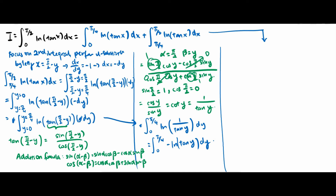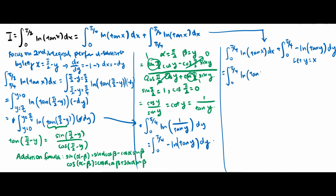So this whole thing equals: the original integral is equivalent to the integral from 0 to pi over 4 of ln(tan x) dx plus the second integral, which we derived as negative ln(tan y) dy. For the second integral, we let y equal to x and bring out the negative sign, so we get the integral from 0 to pi over 4 of ln(tan x) dx.